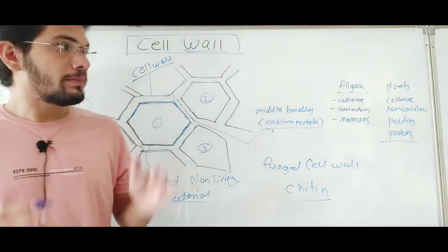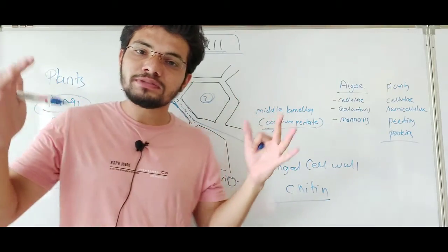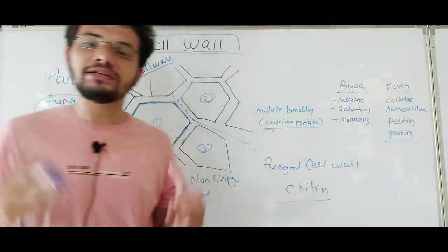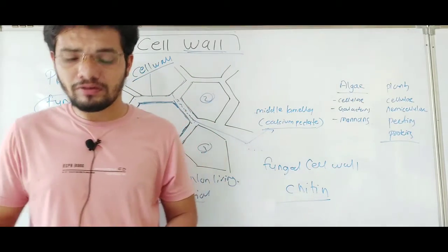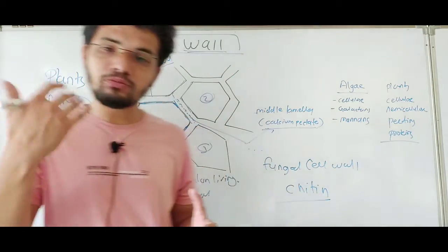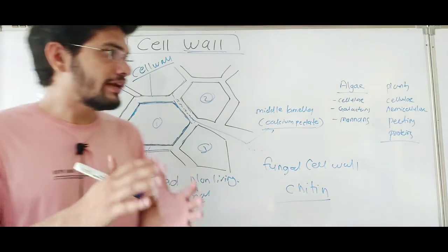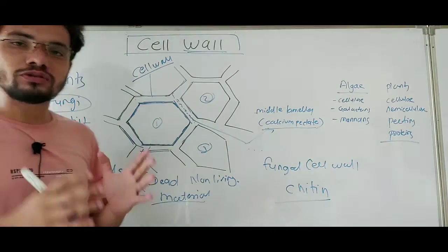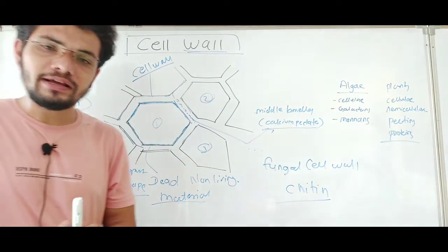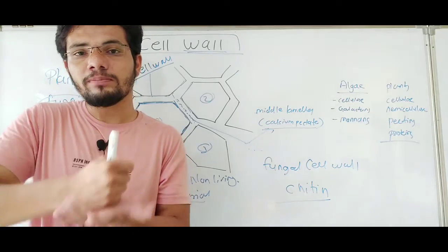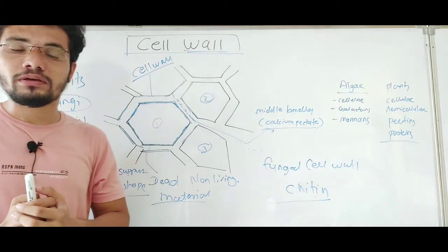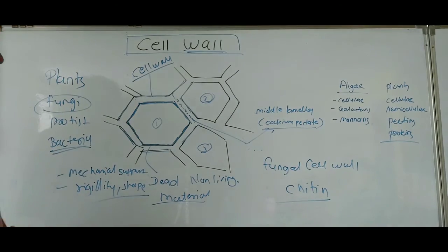Plant cells need this kind of support because they cannot move from one place to another. Animals, if environmental conditions change, can move because they are motile — so they don't need a cell wall. Plants, on the other hand, are stationary and have to stay in one place throughout their lifetime, which is why they have a cell wall.